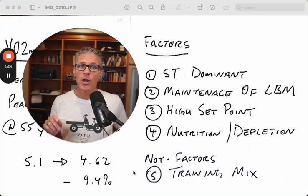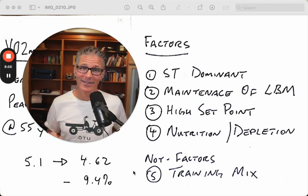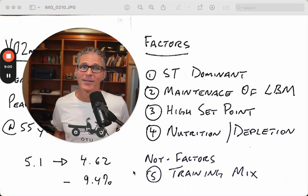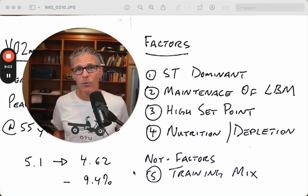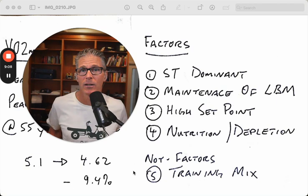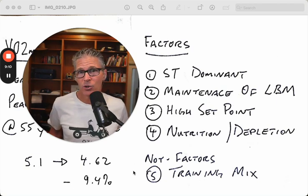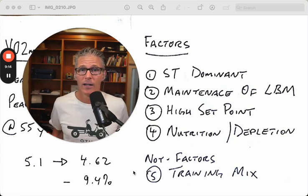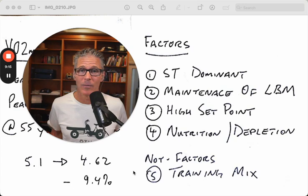Here's something: non-factors, not factors. Training mix. I've never tried to optimize my VO2 max. I've always set my training up based on my larger goals in my life. Being a long-distance athlete, it's usually been about the low end of my aerobic profile as well as my durability and my resiliency.